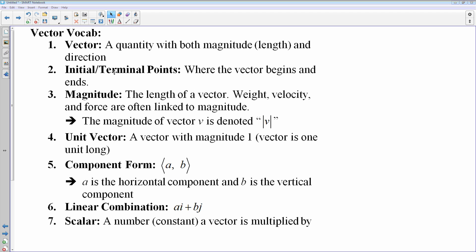You have terminal and initial points, which is simply where the vector starts and ends. The magnitude is the length of the vector. And you do need to note that if you see this, that means find magnitude. That is the notation for magnitude.